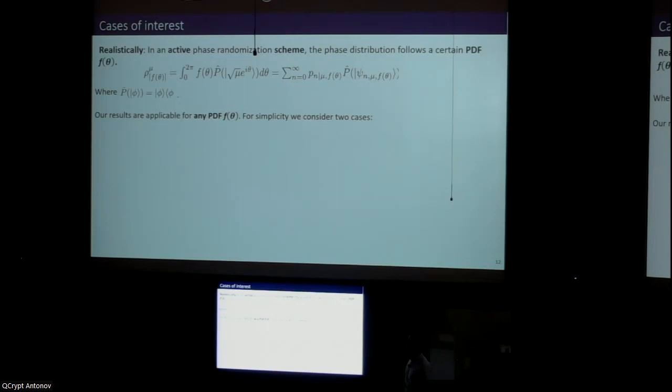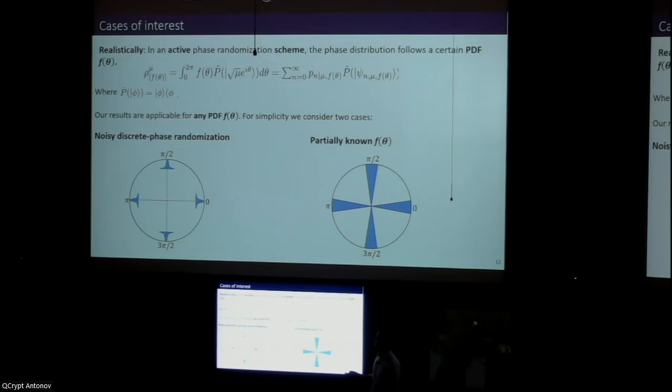The first one can be regarded as an observation of the ideal scenario, in which basically once we select a certain phase setting, for example π/2, the phase follows a certain distribution around the phase setting. But essentially to apply this model we need to characterize f_θ, so we need exact knowledge of what f_θ is. This relaxes this constraint because here the only parameter that we care about is the maximum deviation between the phase setting that is selected, for example zero here, and the phase that is actually emitted. We're going to call this parameter Δ_max.